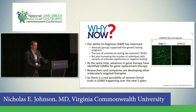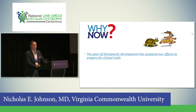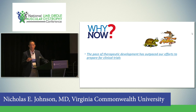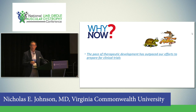There's real possibility of several clinical trials in limb girdle happening over the next five years. The pace of therapeutic development has outpaced our efforts to prepare for clinical trials. The worst possible outcome is having a highly promising therapy and not knowing how to measure whether or not it's working — because that would mean it wouldn't be approved by the FDA. The therapies have really outpaced our ability to get ready for those clinical trials.